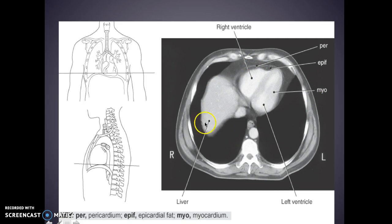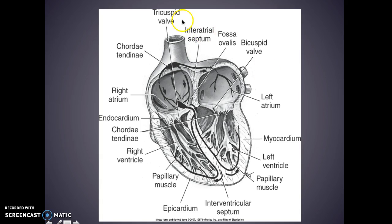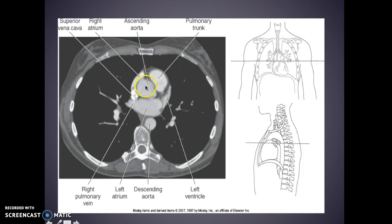Here's the heart — this is the liver. This is the right ventricle and then you can see the left ventricle. This is the myocardium, which is the muscle, and then you can see the fat within there. Coming down: you have your tricuspid valve, your interatrial septum, your bicuspid valve, your left atrium, your myocardium, and your papillary muscles — these little hair-like muscles. You have your interventricular septum, here's your epicardium on the outside, and this is your right ventricle with your right atrium.